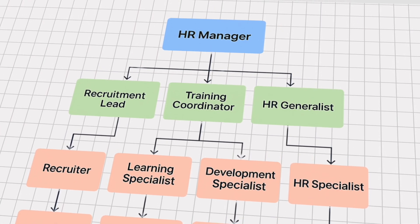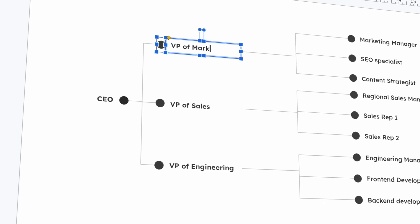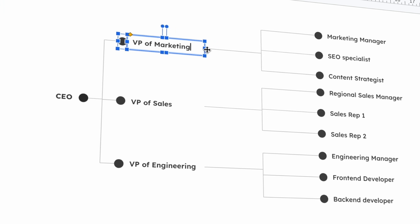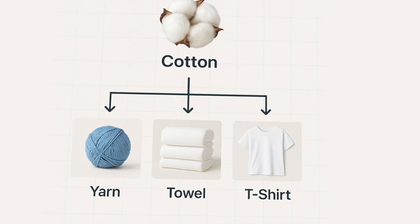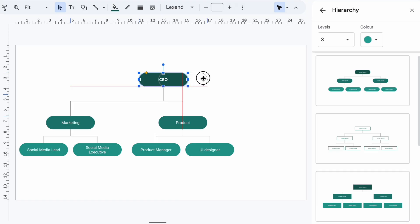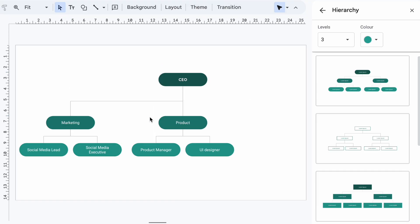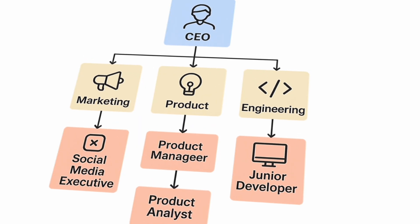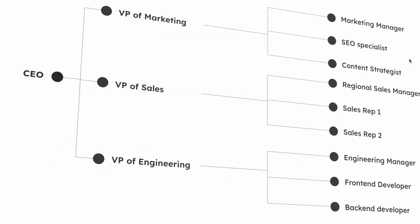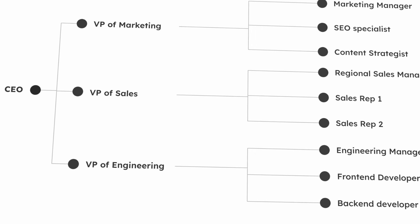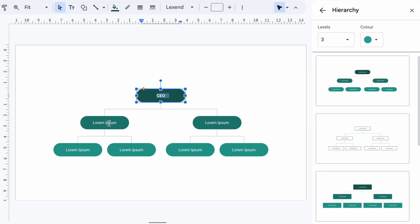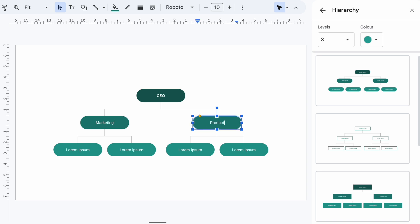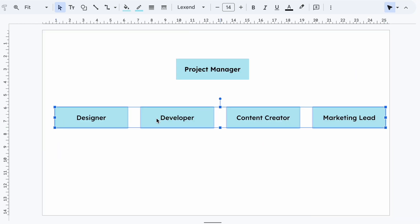Whether you are an HR manager mapping out your team, a startup founder pitching your organizational structure, a project lead organizing team roles, or even a student prepping a group presentation, you don't need another app to create an organizational chart. You can design clean, professional, even branded organizational charts right inside Google Slides. In this video, I will show you two powerful ways to do it: one that's super quick with built-in layouts, and one that gives you full creative control to design your chart from scratch.